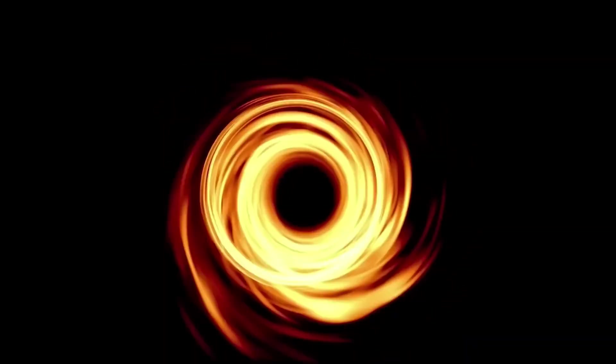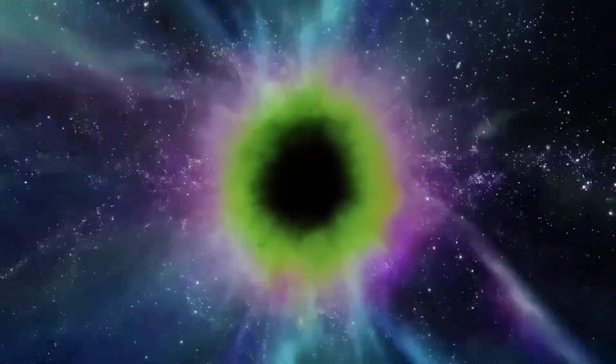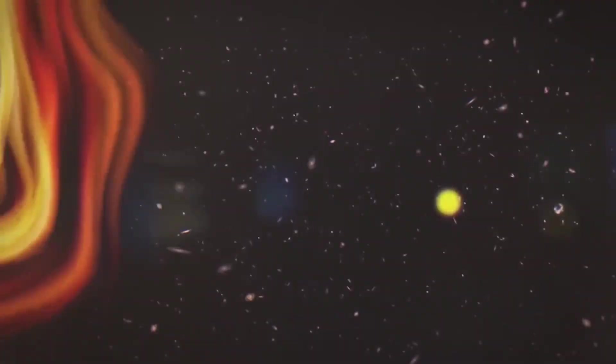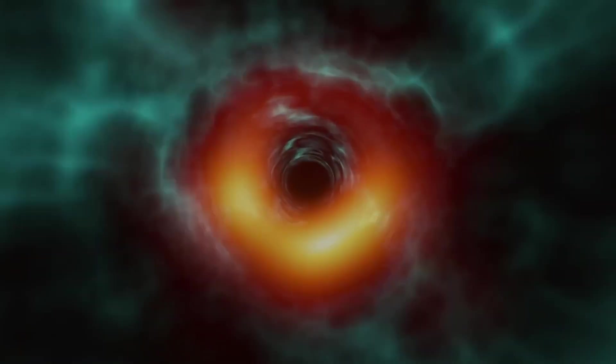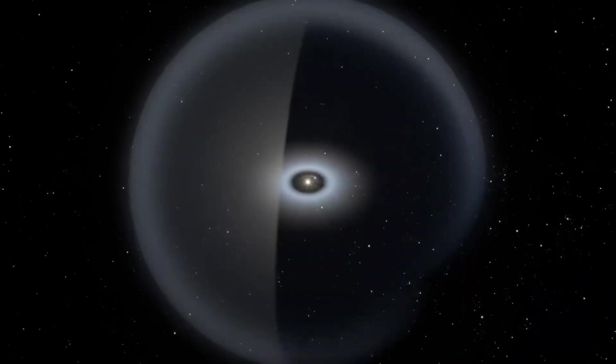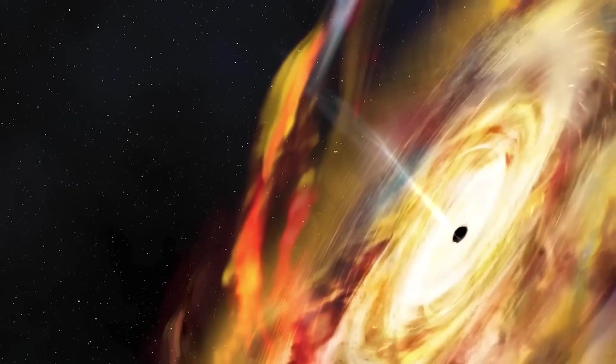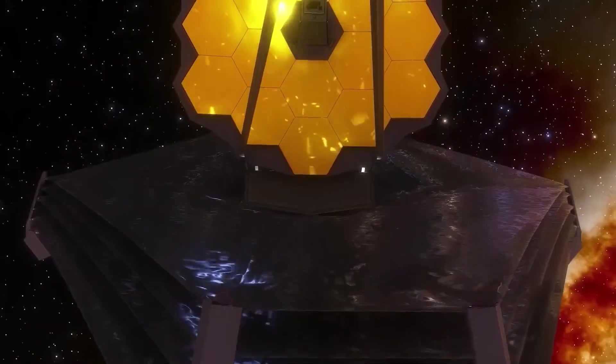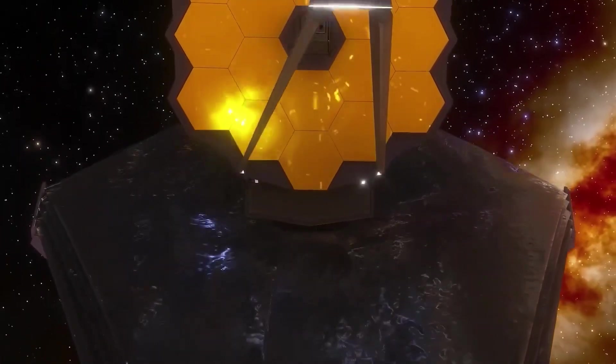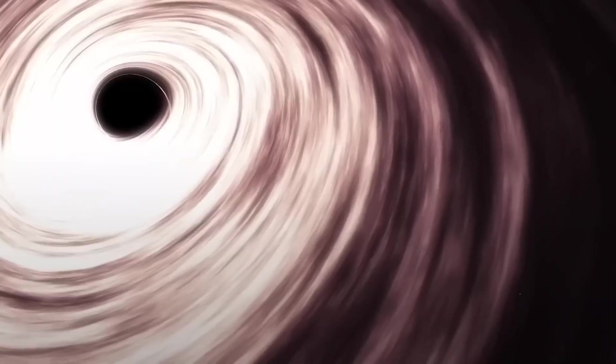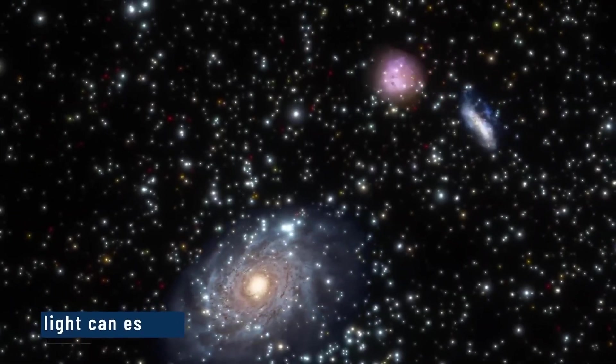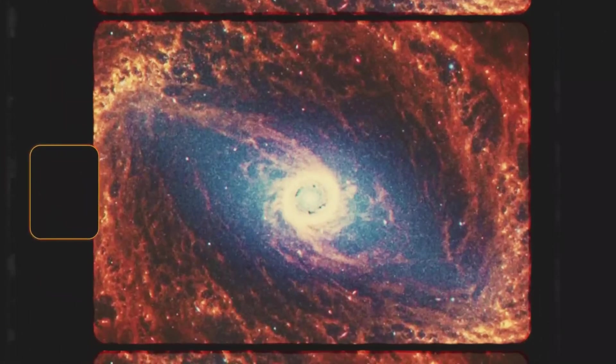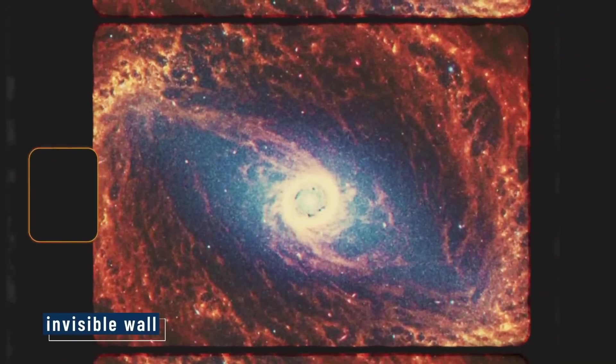Now that we have watched black holes being born from both dying stars and collapsing gas clouds, let us examine what happens when they begin actively interacting with the universe around them. Because black holes do not just sit still passively in space. They pull, they twist, they tear things apart violently, and every now and then they get dangerously close to other stars and planets. In the next part of our journey, we will explore the violent gravitational dance between black holes and the celestial objects that stray too close, sometimes with truly fatal consequences.